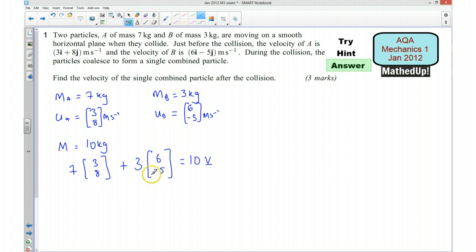Okay so if I work this out, I've got 21 plus 18. And then over here I've got 56 take away 15. And that's going to be 10V.